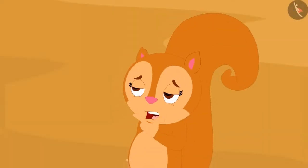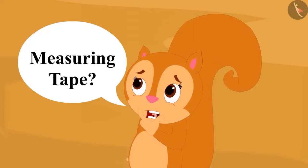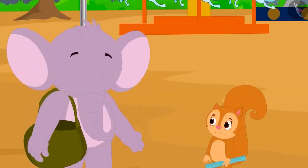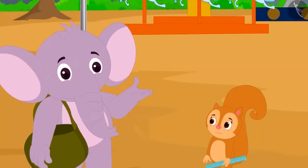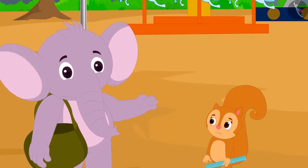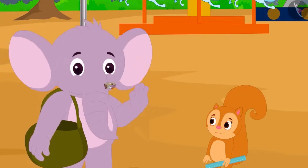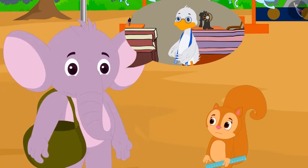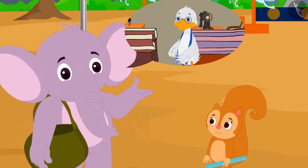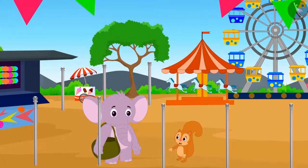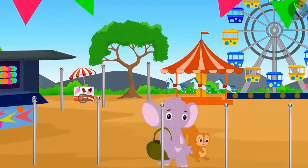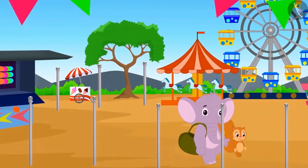Chanda told Appu she had never seen a measuring tape and asked if he could show her. Appu told her he didn't have it at that moment, but if she met him at uncle's shop the next day, he would borrow the measuring tape from uncle and show it to her. Chanda agreed, and the two decided to meet at uncle's shop the next day and went to their respective homes.